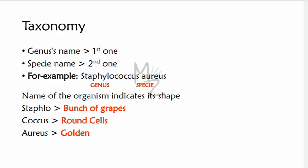Now for taxonomy: the first name of every microorganism is its genus name and the second is its species name. For example, consider the bacterium Staphylococcus aureus — Staphylococcus is the genus and aureus is the species. The name of the organism also indicates its shape: staphylo means 'bunch of grapes,' coccus means 'round cells,' and aureus means 'golden.' So it is a circular bunch of bacteria that are colored gold.